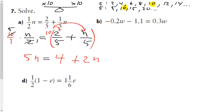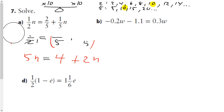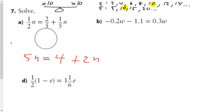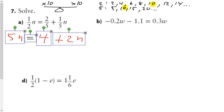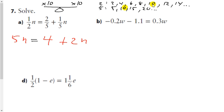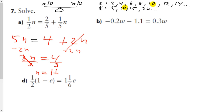By multiplying both sides by 10, I've turned this complex equation into one with no fractional coefficients or constants, which is much easier to solve. I have variables on both sides, so I get rid of 2n from both sides, leaving 3n equals 4. Dividing both sides by 3 gives n equals 1 and 1/3, or 1.3 repeating as a decimal.